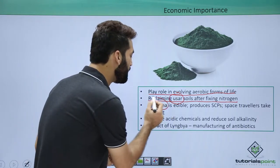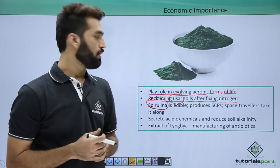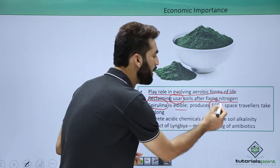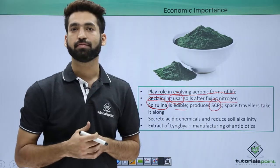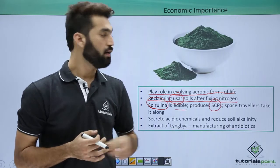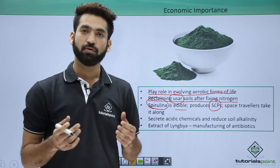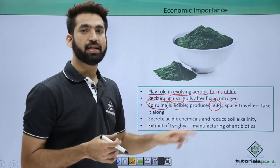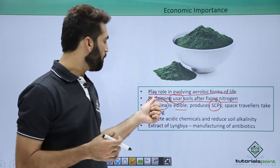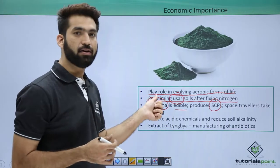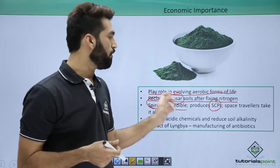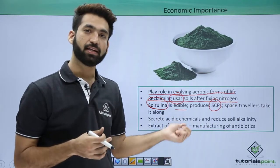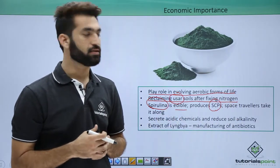The third point is Spirulina, a very important cyanobacterium. Spirulina is edible and is a rich source of SCP, which stands for single cell protein. Single cell proteins are proteins obtained from a single cell and are required in our diet. Space travelers take Spirulina along with them as a protein source when they travel to space.